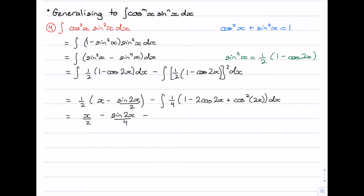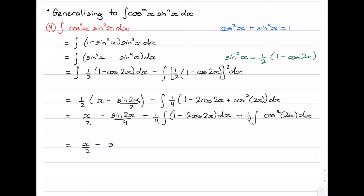Let's break the second integral into two separate integrals. We take out the quarter, giving us a quarter times the integral of (1 minus 2cos 2x) dx, minus a quarter times the integral of cos squared 2x. For the first part, the integral of 1 is x, and the integral of 2cos 2x is 2 sine 2x divided by 2 — and those 2s will cancel. So we have minus a quarter of (x minus sine 2x).